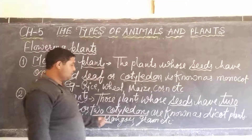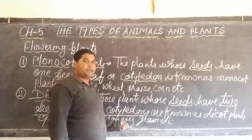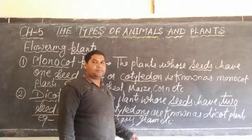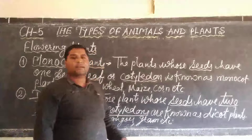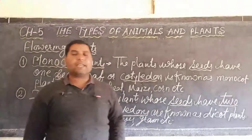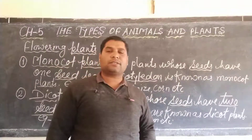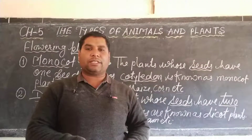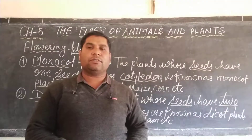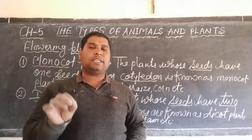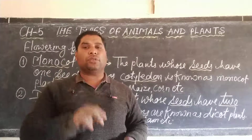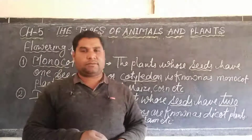Bee, meadow, ground, and many more plants are known as dicots, whose seeds have two cotyledons.